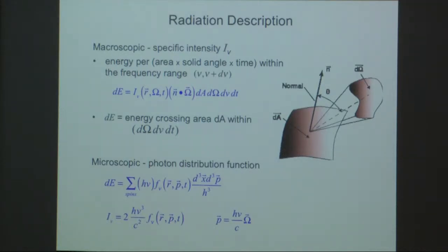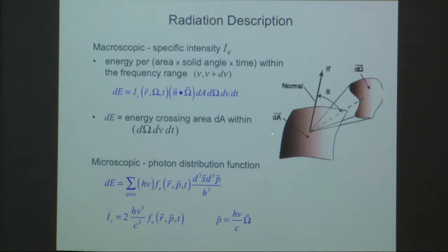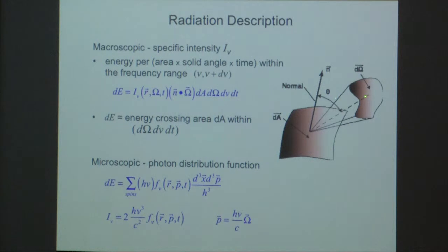The radiation description: two different descriptions. The macroscopic description is in terms of the specific intensity, which is the energy traveling per unit area, per unit solid angle, per unit time, within a given frequency range. So the energy crossing a unit surface — here's a unit surface going in a direction denoted by omega. The normal to the surface is denoted by unit vector n. This is the energy crossing this surface per unit area, solid angle, frequency interval, amount of time, and the direction normal to the area.